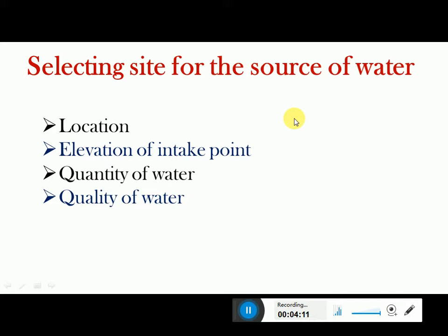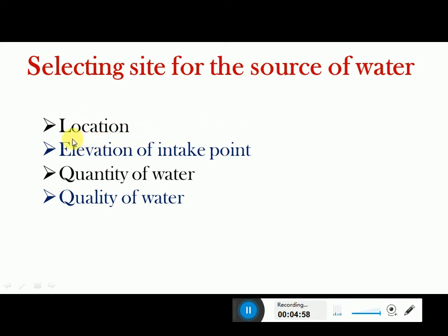The major aspect to consider is the selection of the site for the source of water. The first point is location — if we are supplying water to a particular community, the location of the source is important. Water has to go through a lot of physical and chemical treatment, and may need to be pumped over long distances using pumps, sewer pipelines, and underground excavation. So as far as possible, the source location should be near to the community.